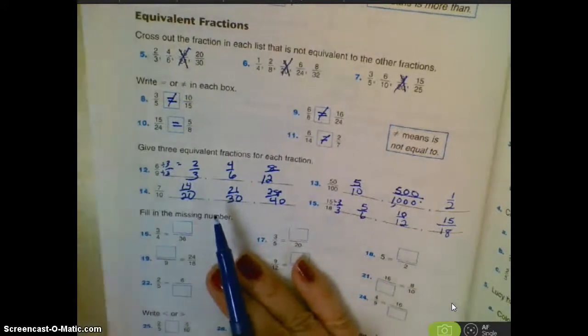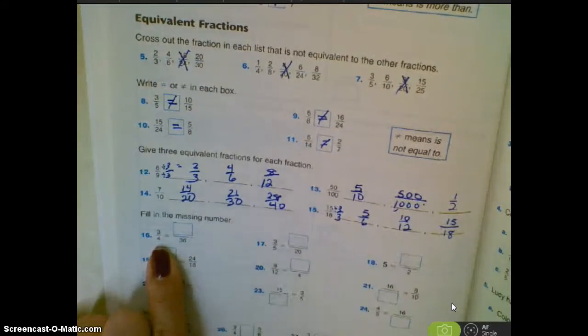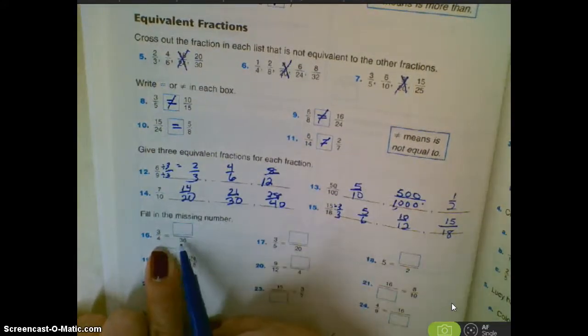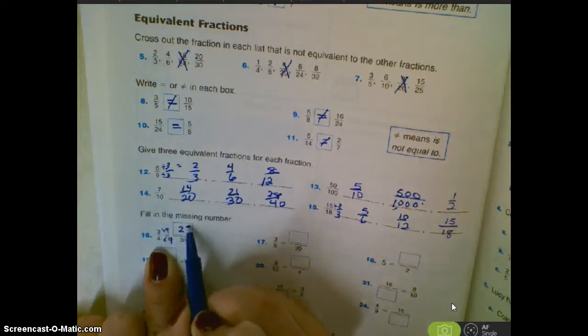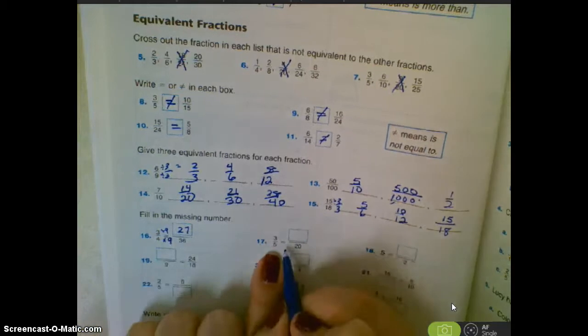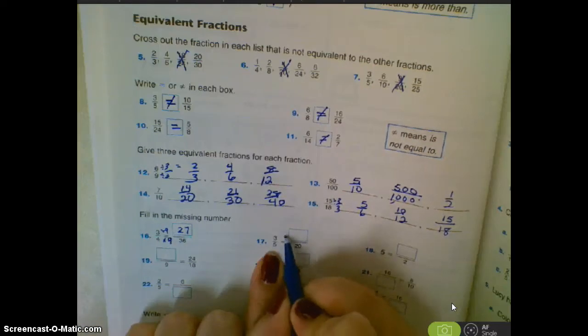Find the missing number. We talked about this one before you left today. Four times nine is thirty-six. So we need to do the top also. So nine times three would be twenty-seven. Five times four is twenty. So three times four would be twelve.